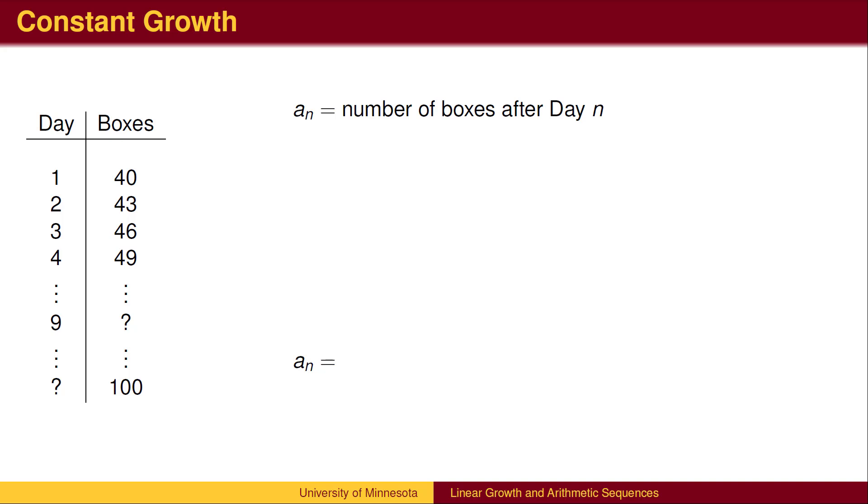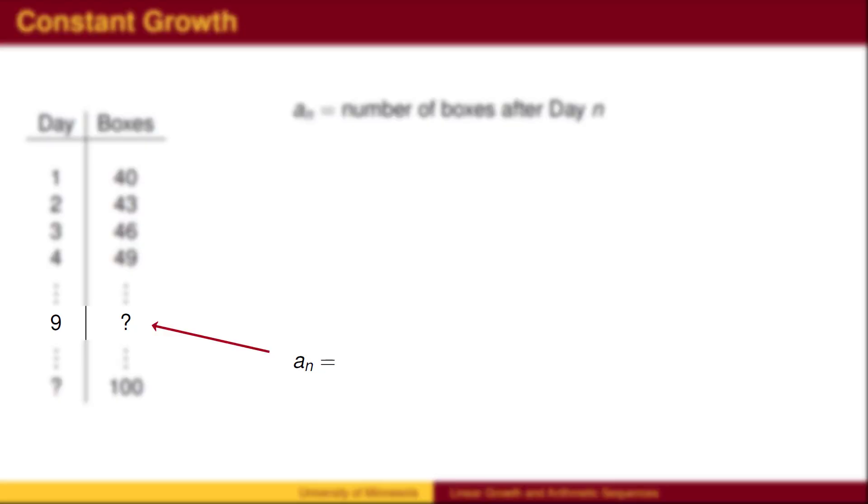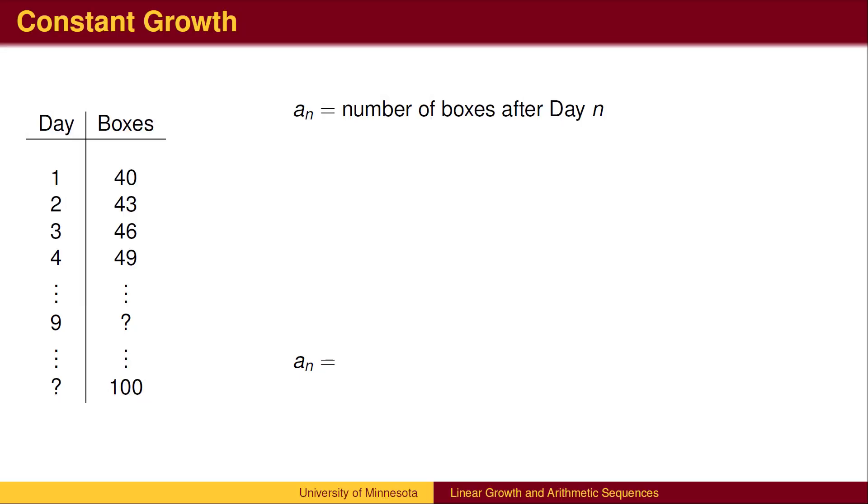For example, if we had the explicit formula, we could plug in 9 to compute the number of boxes after day 9. From the chart at the left, we can see that a_1 is 40, a_2 is 43, etc.